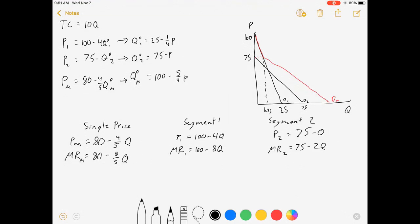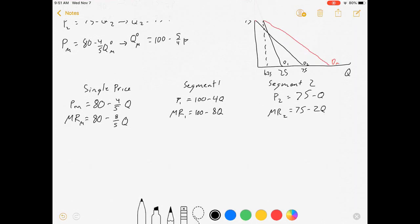Let's also remember with our total cost, if it's 10Q, there's no fixed cost there. And our marginal cost will just be 10. If you don't have calculus, it'd be given to you. If you do, it's just the derivative of 10Q.